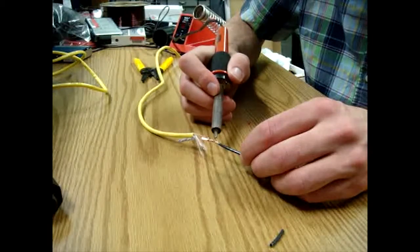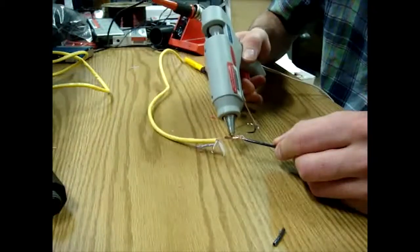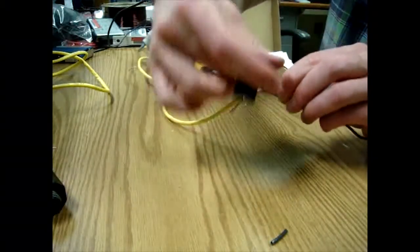So the first thing you will do is solder the wires together. Second, hot glue it and before the hot glue dries, wrap any electrical tape.